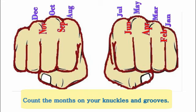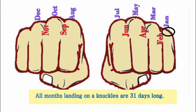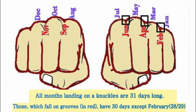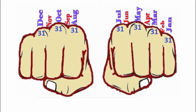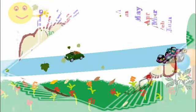January, February, March — on your knuckles and grooves. January, March, May, July, August, October, December all have 31 days. February has 28 or 29 days. April, June, September, November all have 30 days.